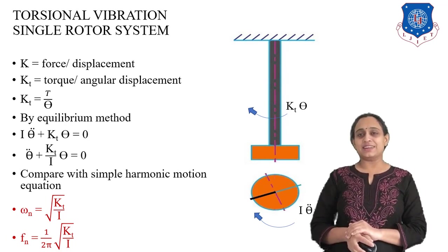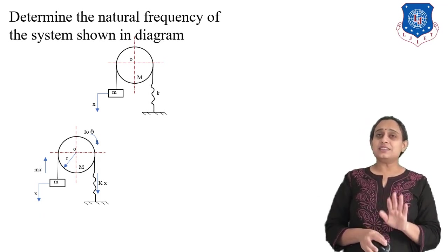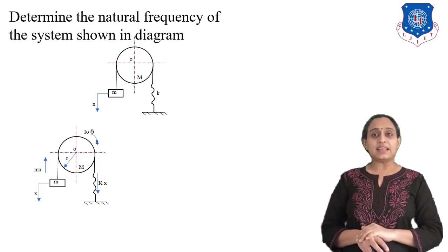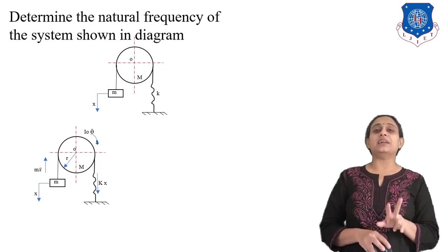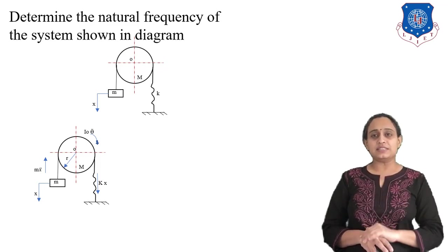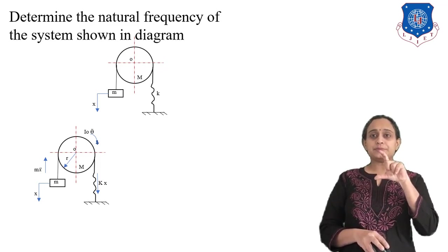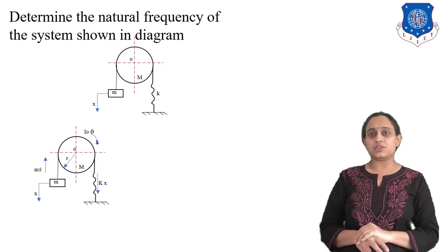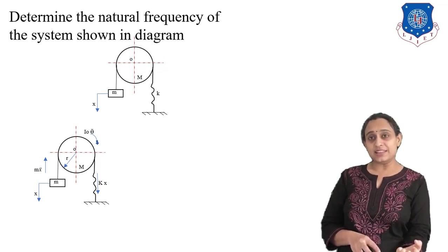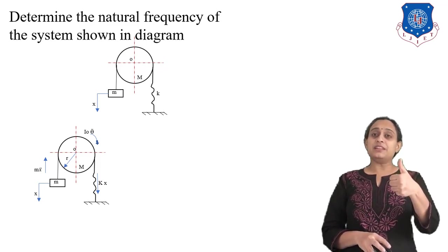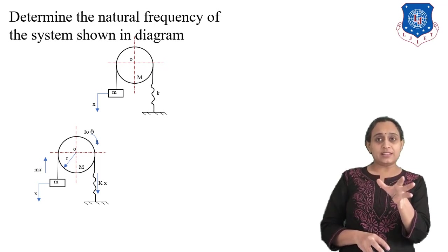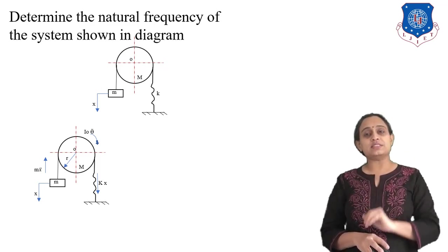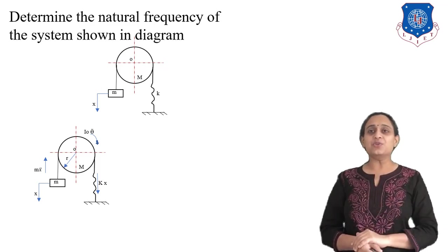Let us now solve a numerical problem: determine the natural frequency of the system shown in the diagram. The diagram shows a base, spring, pulley, and a mass. Assume the mass is pulled downward — the inertia force of the mass will act upward, the pulley will rotate anti-clockwise and return clockwise, and the spring will elongate giving a spring force downward.